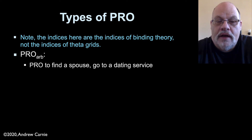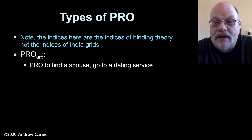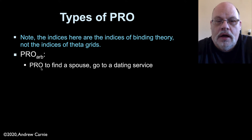For example, the sentence 'to find a spouse, go to a dating service' — the pro in the first clause there is arbitrary pro. It means something along the lines of 'for someone to find a spouse, they should go to a dating service.' So this pro is arbitrary pro. There's also non-arbitrary pro, which shows up in two forms as well.